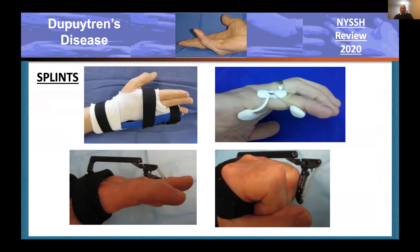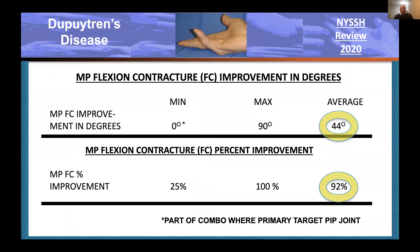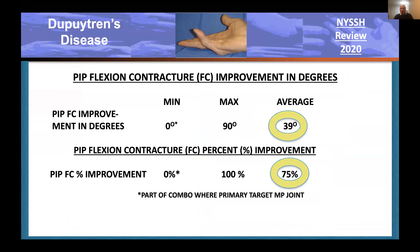After treatment, surgical or otherwise, splinting is appropriate: standard extension splinting at night, reverse knuckle benders for stiff PIP joints, and occasionally the use of a digit widget to stretch out a PIP joint. This does work, but doesn't prevent recurrence 100%. In my hands, improvement with MP contracture with collagenase has been reasonable—about 40 degrees and 90% improvement. As you would expect, PIPs do worse but still get meaningful improvement.